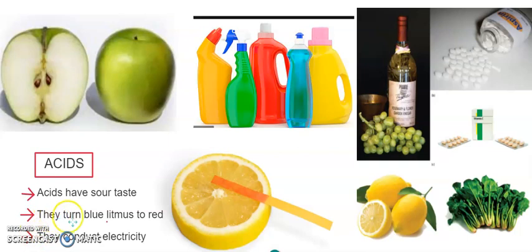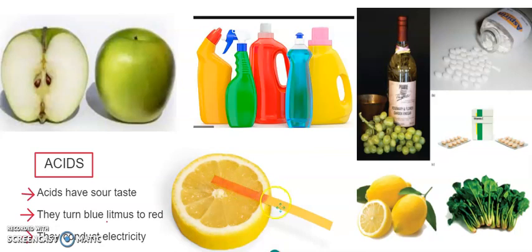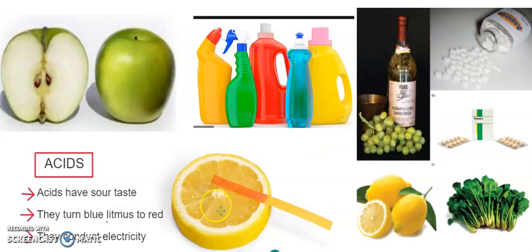Acid testing can be done one way by using a litmus paper. This red color paper kept on top of the lemon is called a litmus paper — it is a red litmus paper. Red litmus paper shows no major change in color because red litmus paper will not detect an acid. In place of red, if you place a blue litmus, it changes into red.